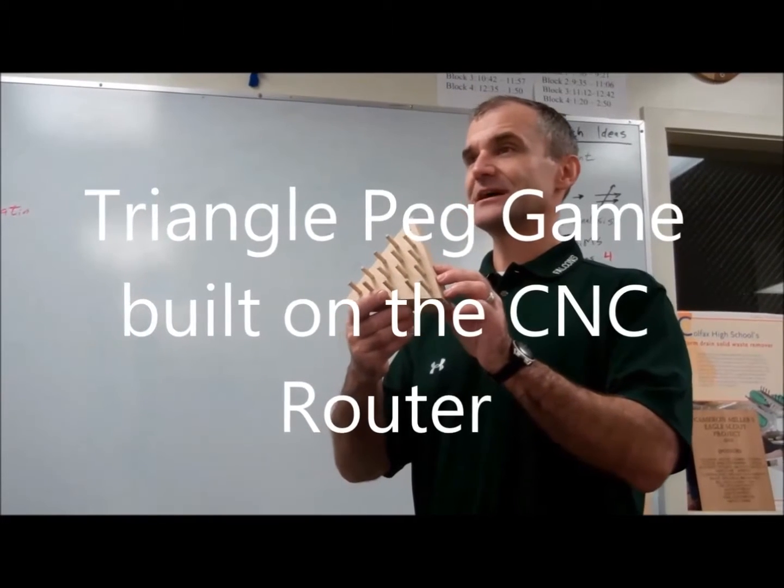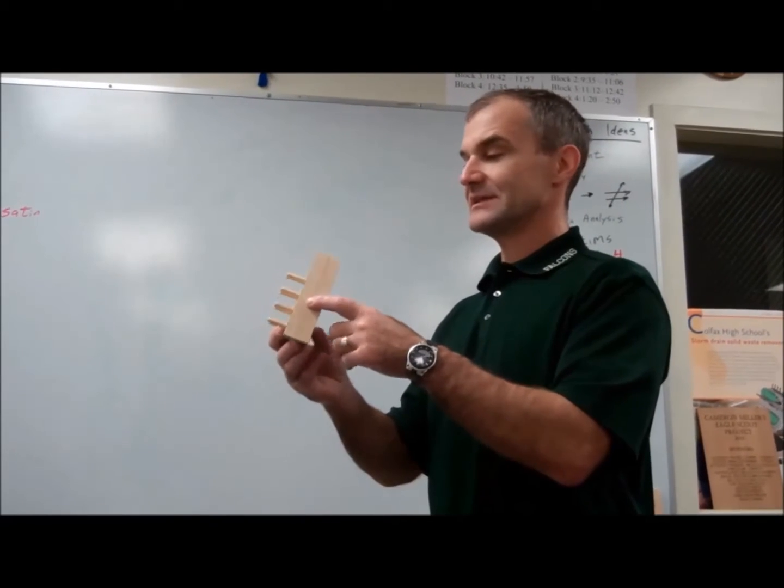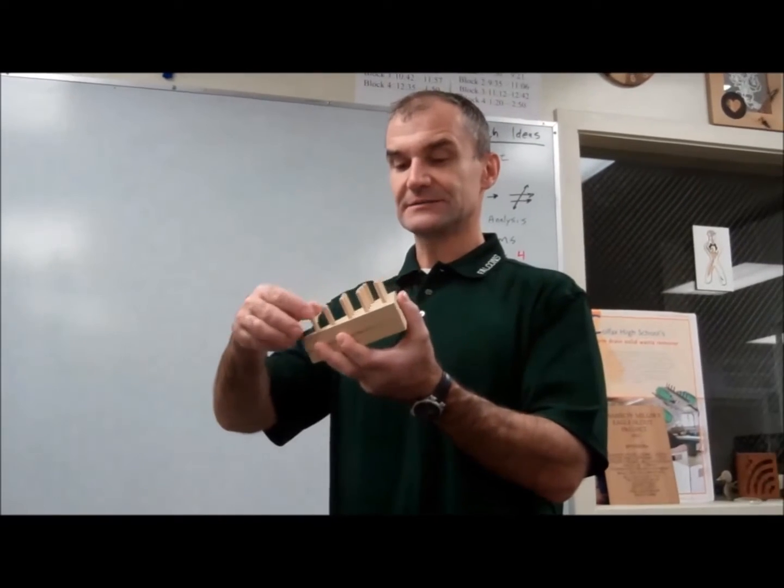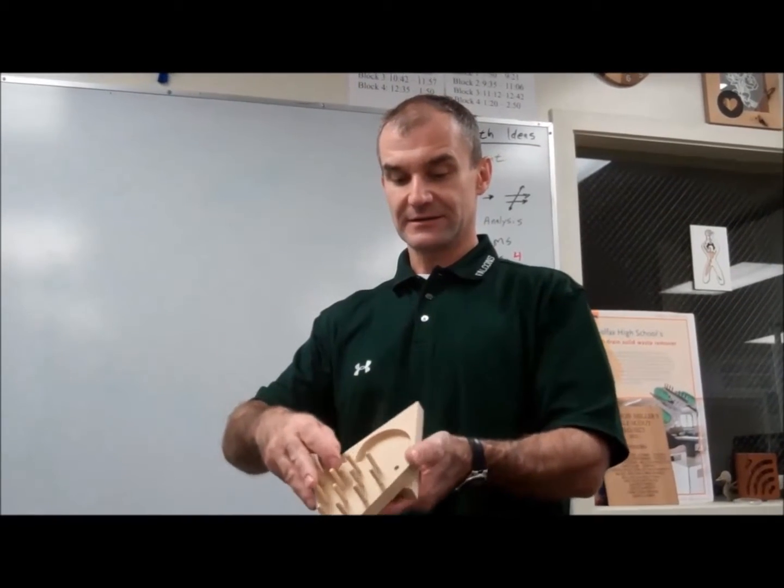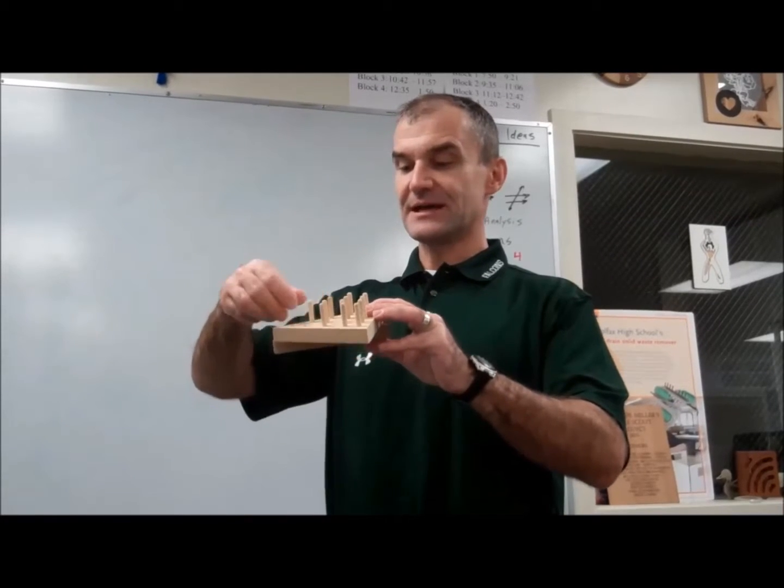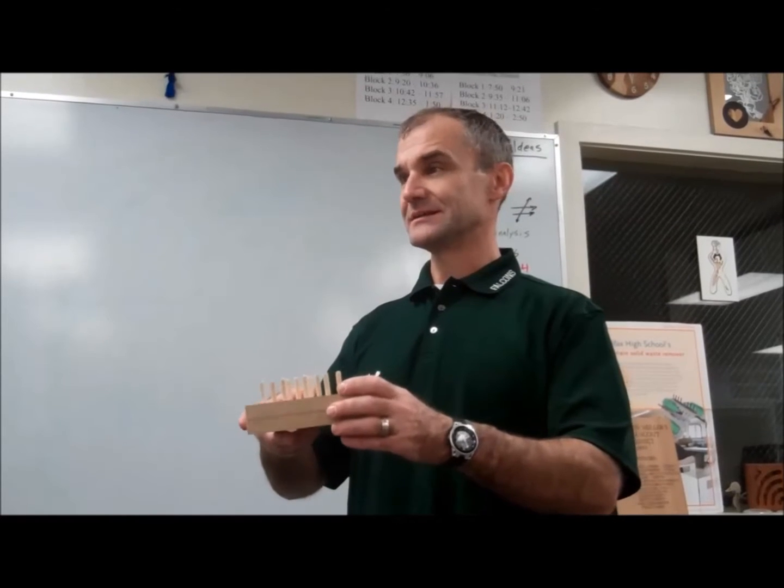Here's going to be our next project, the triangle peg game. It's two pieces of three-quarter inch MDF with quarter inch holes and quarter inch dowels. There's a pivot right there so there's a pocket in the bottom triangle so you can take the pegs out, put them in that pocket and then close it up and travel with it.